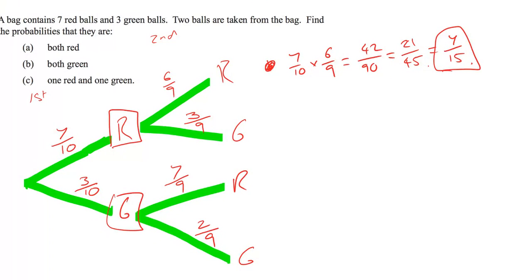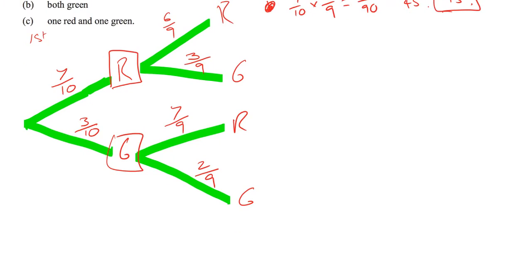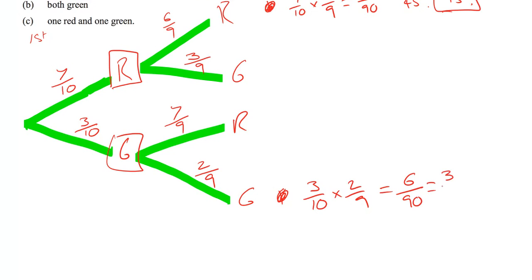For both green, we go to the green-followed-by-green branch: three out of ten multiplied by two out of nine, which is six over ninety. That simplifies to three over forty-five, and again down to one over fifteen.